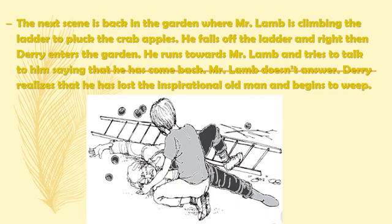In the next scene we see Mr. Lamb's garden again. Mr. Lamb is climbing a ladder to pick crab apples from a tree when suddenly the ladder falls — Mr. Lamb falls down into the garden. Just then Derry arrives, enters through the gate, and seeing Mr. Lamb lying there, runs toward him and tries desperately to talk to him. He wants to tell Mr. Lamb that he kept his promise and has returned, how much inspired he feels — but Mr. Lamb gives no answer.